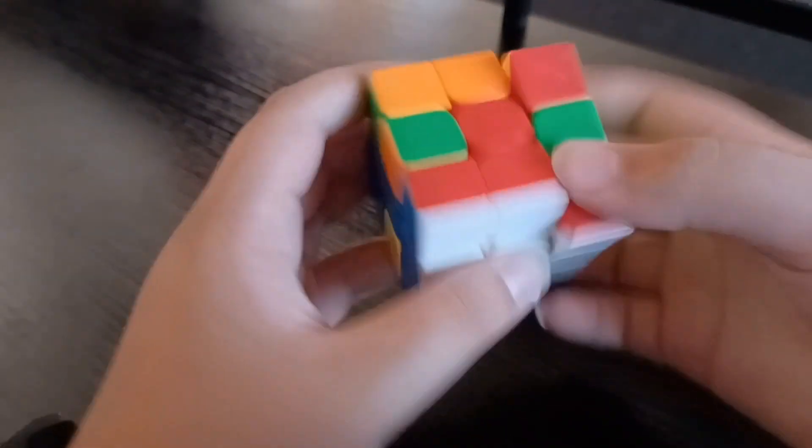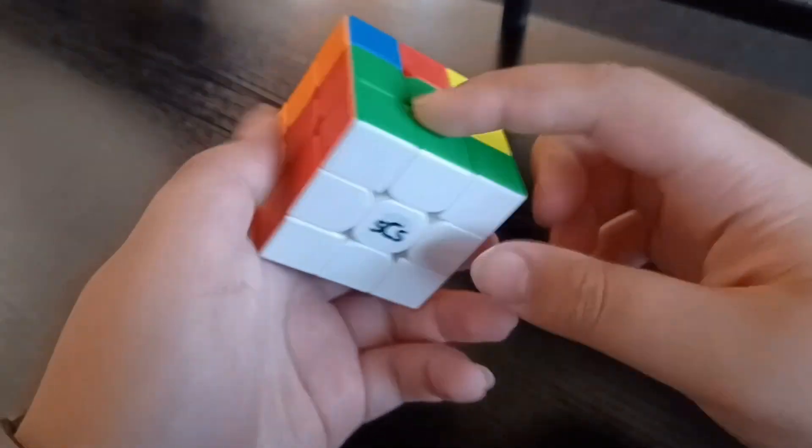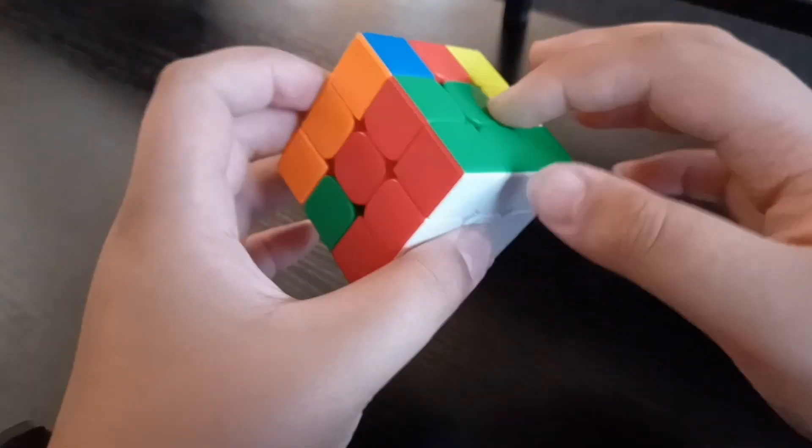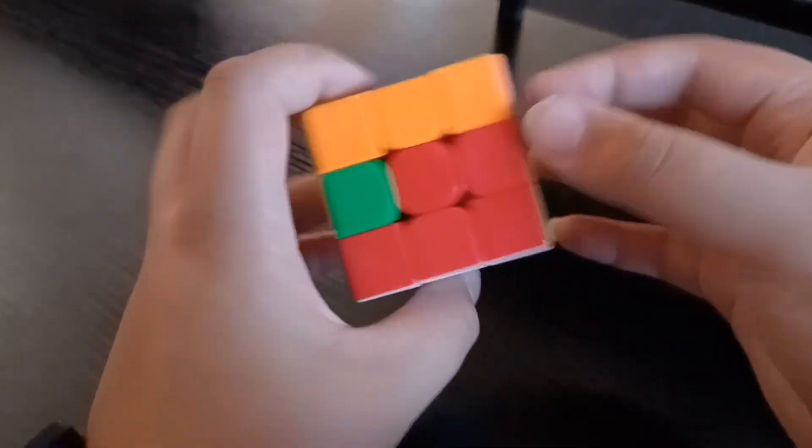So for example, if I had this in the right place it would be like, since there's red green right here, it would have to be a red green edge piece.